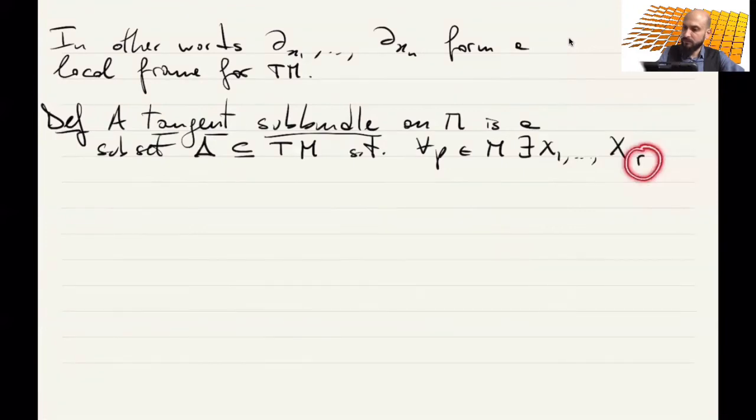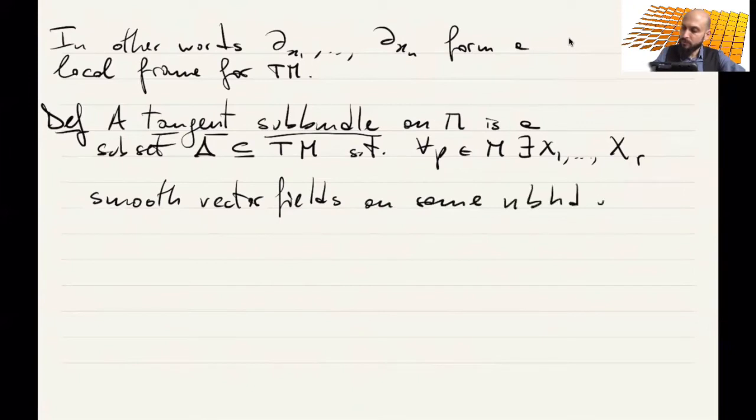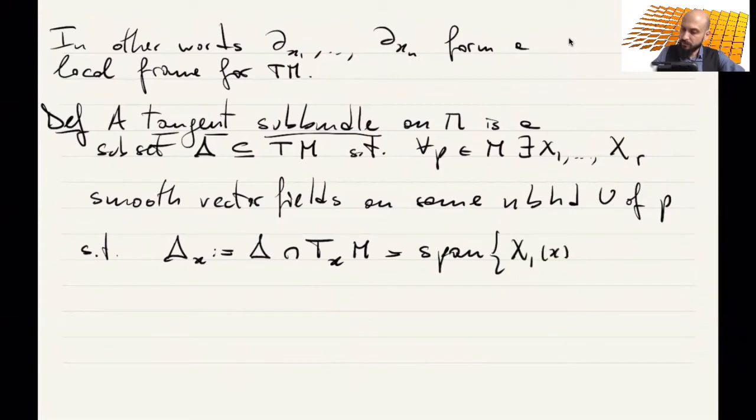Let's call them the vector fields x1 to xr. This r is another number different from n. So these are smooth vector fields on some neighborhood of p.